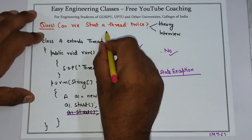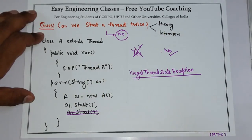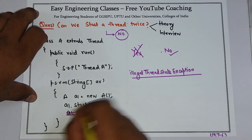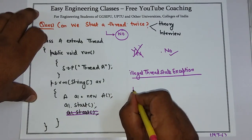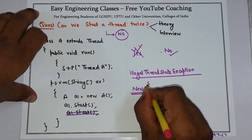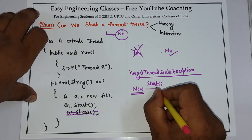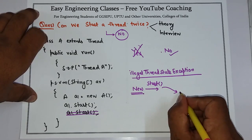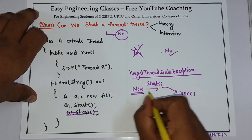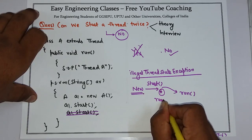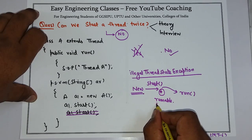The answer is no, we cannot start a thread twice. Because if we try to do so, we will get an IllegalThreadStateException. What happens is: when the thread is created, the thread is in the newborn state. In the newborn state, you call the start method, which starts the thread and waits for the processor. When the processor is allocated, it moves to the run method. So if you try to call start on a thread already in the runnable state, it is not valid.